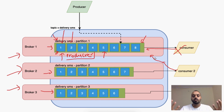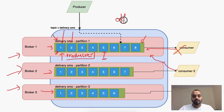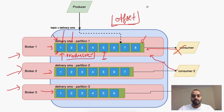The consumer dies and consumer 2 comes in. How does consumer 2 know from where it has to start reading? It will not start reading from offset 1 because that would reprocess the messages. So there should be some mechanism where consumer 2 knows from where to read. This information is stored in an offset topic.